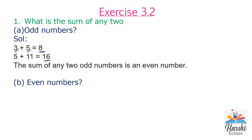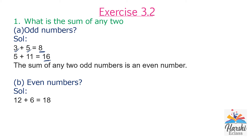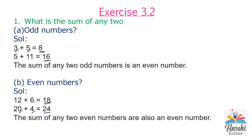One more example: 5 plus 11. 5 and 11 both are odd numbers. Sum of these two odd numbers is 16, an even number. So the sum of any two odd numbers is an even number. Part B: What is the sum of any two even numbers? If we add any two even numbers, we will get an even number. For example, 12 plus 6 equals 18, which is an even number. 20 plus 4 equals 24, which is also an even number. So the sum of any two even numbers is also an even number.